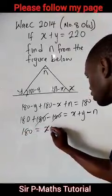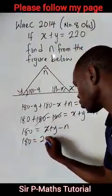Recall that x plus y is 220. So I have 180 equal to 220 minus n.